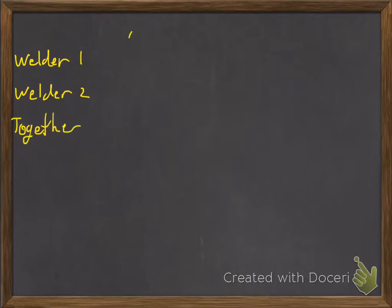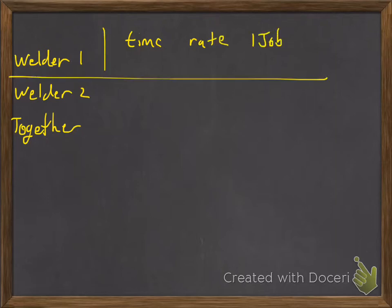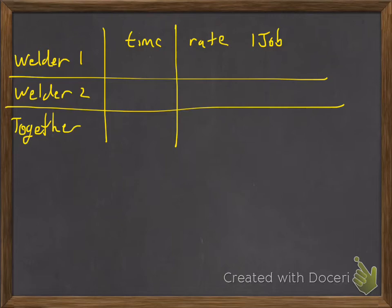Now when we make this table for other problems, we have time times the rate equals one job. The assumption when we make this table is they're working together the entire time, but they're only working together for 17 hours, at which time one of the welders quits and the other one works for 20 more hours. So let's see what we can do with this.